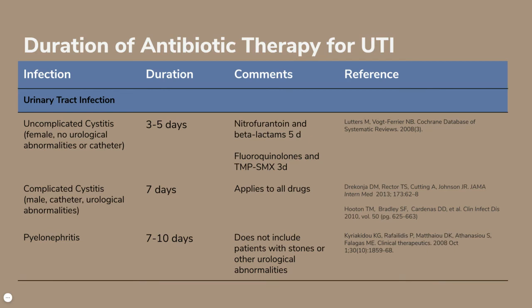For duration of therapy, it is quite straightforward: the higher up the urinary tract, the longer the duration. First-line nitrofurantoin for uncomplicated cystitis can be used for as short as five days. Trimethoprim-sulfa can be as short as three days. Complicated cystitis is generally seven days, and pyelonephritis is typically seven to ten days, though complicated pyelonephritis may require longer courses.